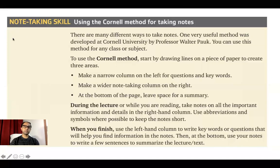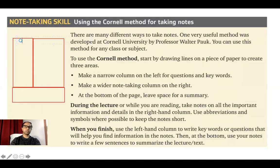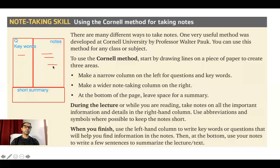So what you have is a narrow column on the left for questions and keywords, a wider column on the right for notes about the questions, and at the bottom you have the summary. You will write all questions and keywords on the left, main notes on the right, and later write a summary at the bottom. Notes would be details, and using questions and keywords you will write the summary.